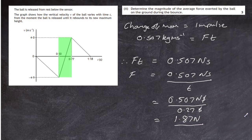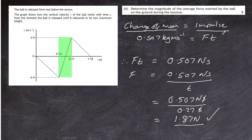We say 'average' force because over the whole collision the force varies — this is the average value exerted by the ball on the ground during the bounce. The key principle is that change of momentum always equals impulse. Some people write it as impulse = mv − mu, but either way: Δp = FΔt, and you can work in both directions.